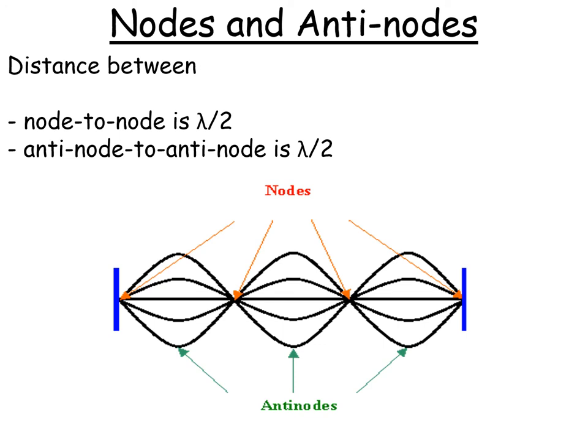Now the key thing you need to note is that from node to node there's half a wavelength, and from anti-node to anti-node there's also half a wavelength. So it's not really that correct to talk about this being a wavelength or a wave—it's really half a wave, because that is what the distance is actually measuring.